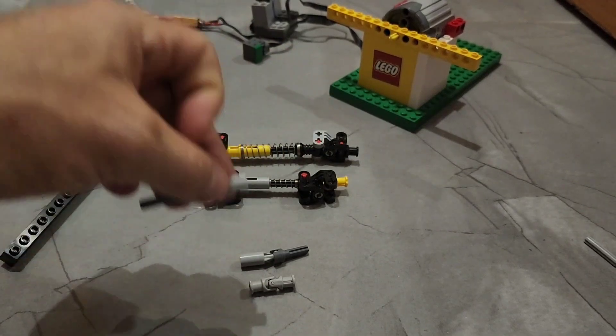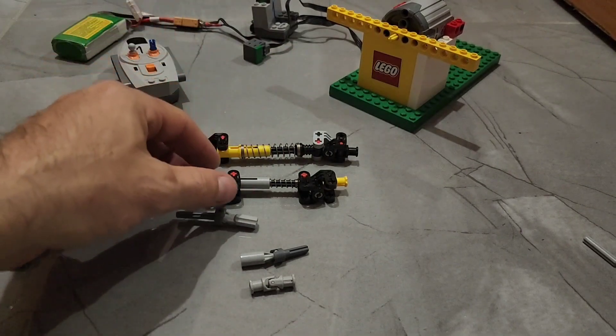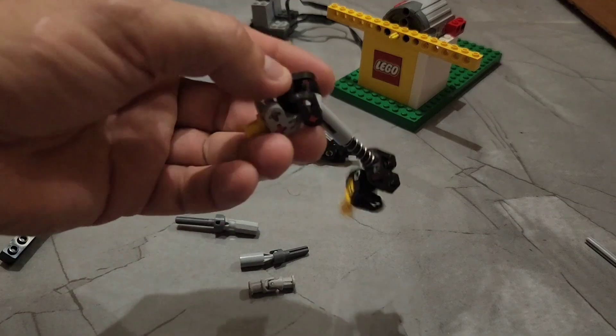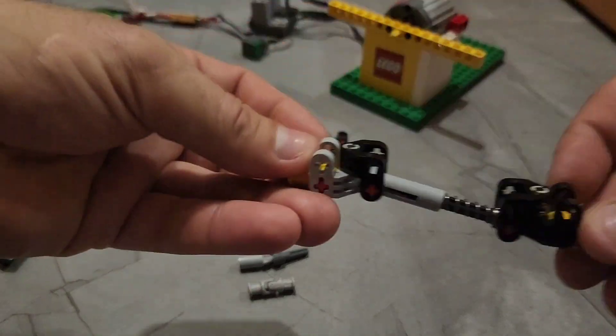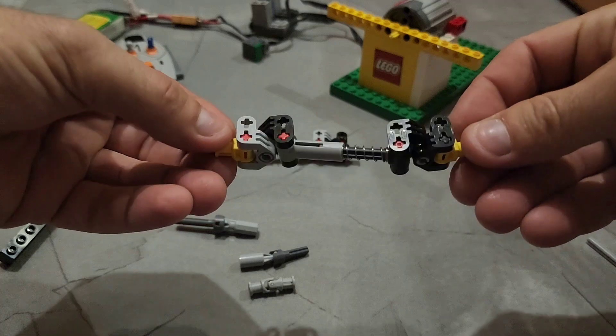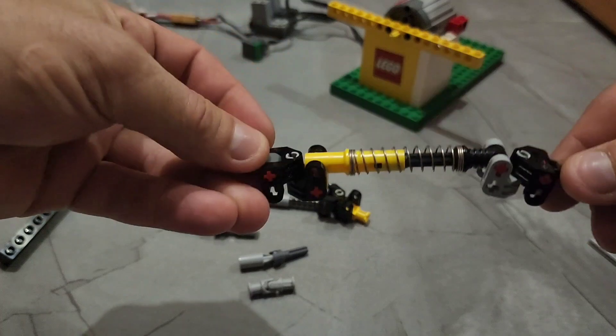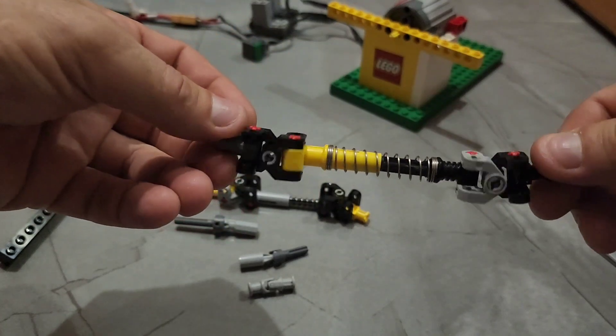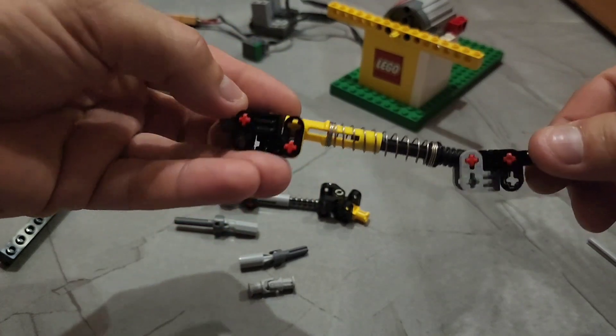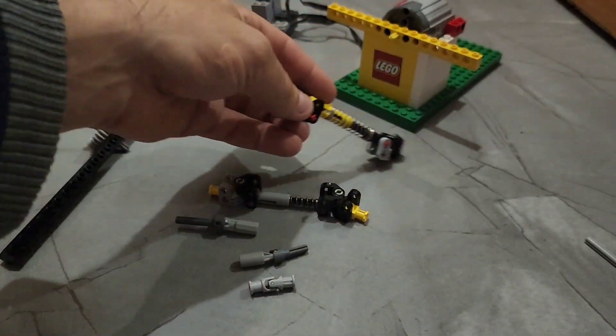For the wheels to go up and down. So I've made a new kind of CV joint. This is the smaller version, and the bigger version is this one. Now I'll show you how it performs.